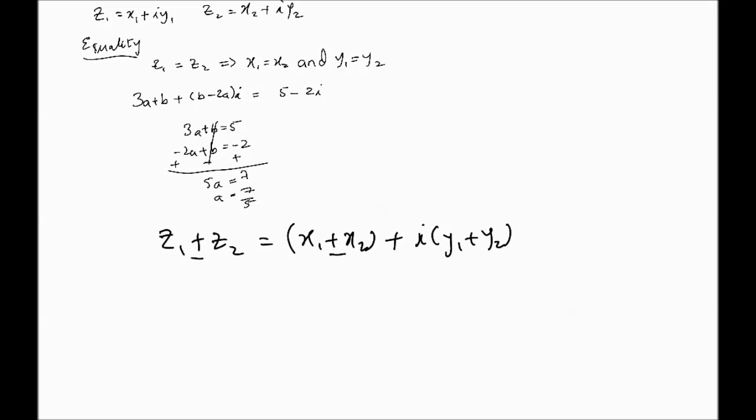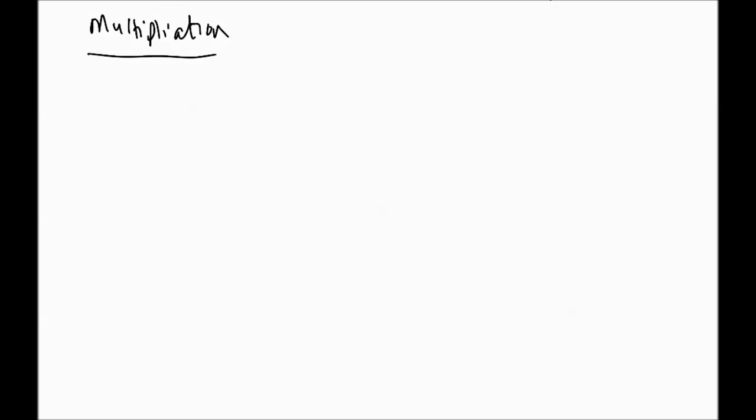Same thing with subtraction. So, if it's Z1 minus Z2, it's going to be X1 minus X2 plus i into Y1 minus Y2. So, for instance, 3 plus 2i. And, if we add to it the complex number 7 minus 3i, that's going to be equal to 3 plus 7 is 10, and 2 minus 3 is minus i. Assuming the same definitions of Z1 and Z2.